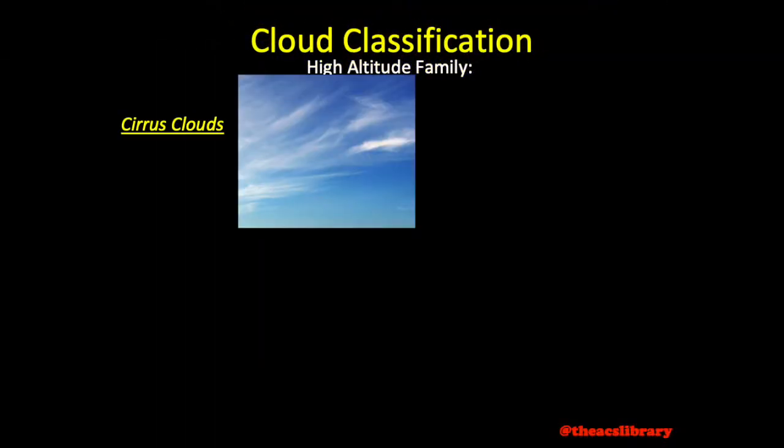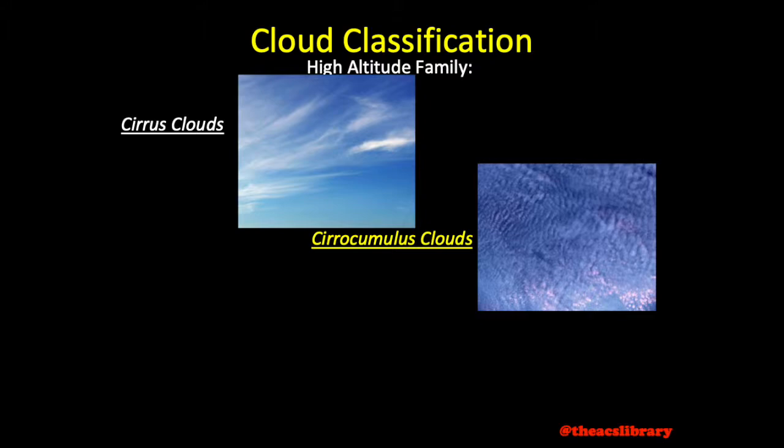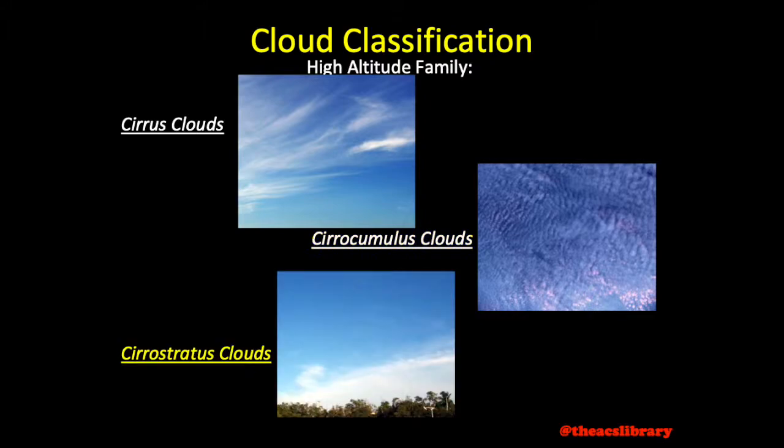Following these rules, the high altitude family includes cirrus clouds, cirrocumulus clouds, and cirrostratus clouds — all of which are typically thin and white in appearance.